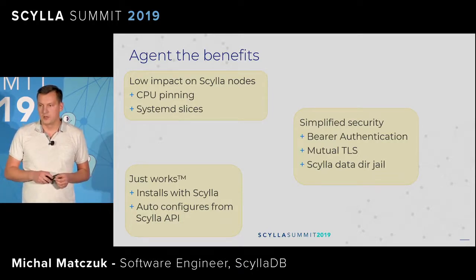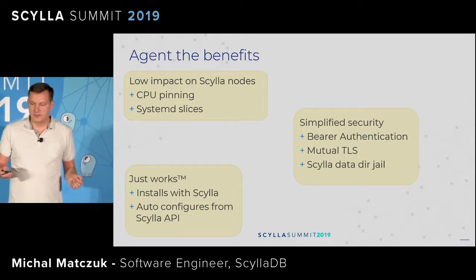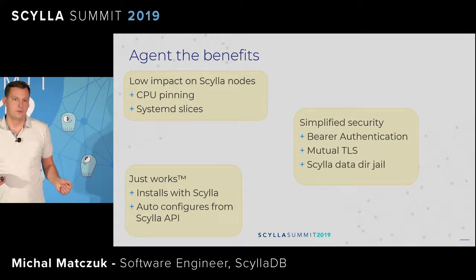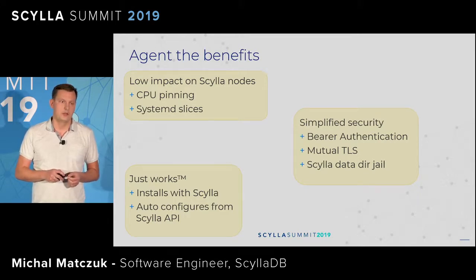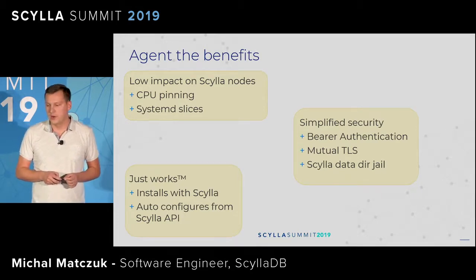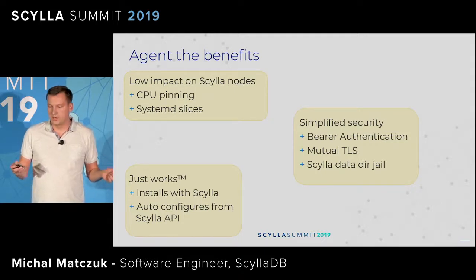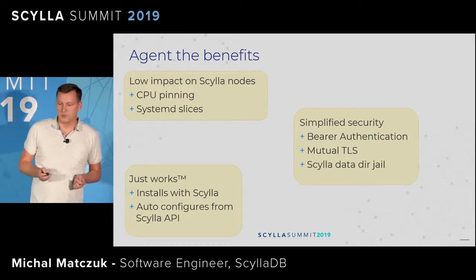The other benefit is that it just works. The agent can read a lot of configuration options from the Scylla configuration API directly — when an agent starts it asks Scylla for the listen address to know where to bind. It also simplifies security: we can have mutual TLS much like with SSH, but we can also fall back to basic authentication, which is really simple to set up.